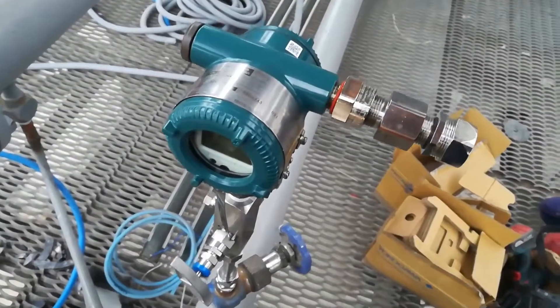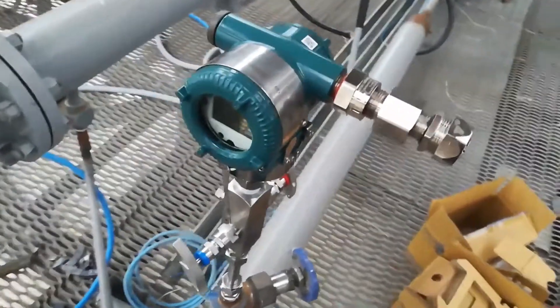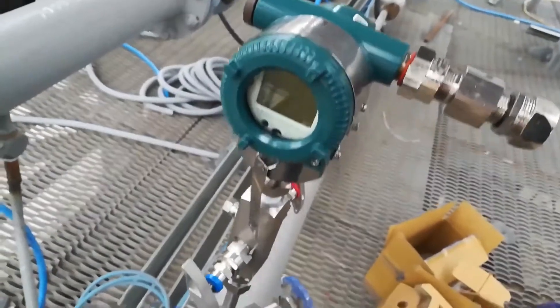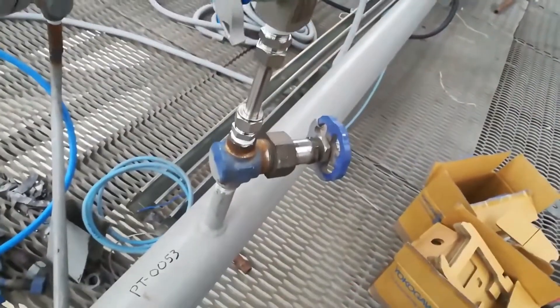Hi dear friends! Today I will connect a Yokogawa overpressure sensor, the model EJX530, which is designed to measure the pressure of a liquid, steam or gas.